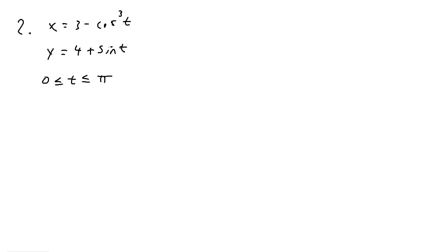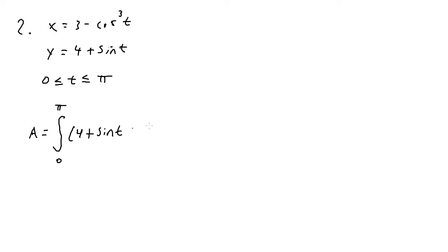For number 2, x equals 3 minus cosine cubed of t, y equals 4 plus sine of t, and our t bounds are from 0 to π. The area formula is the integral from 0 to π of y(t), which is 4 + sin(t), times x'(t). We're given x, so we need to find x prime.